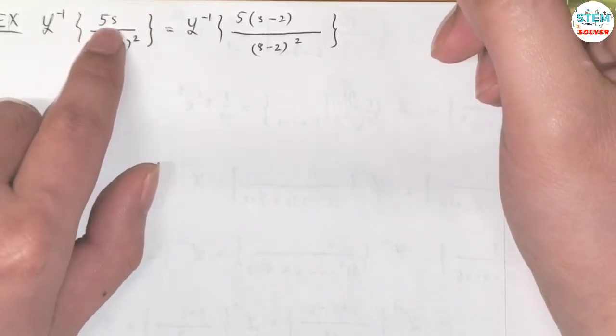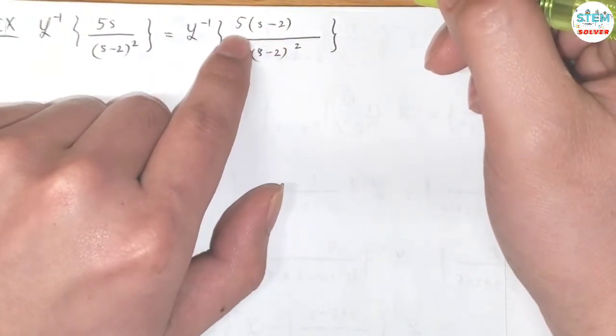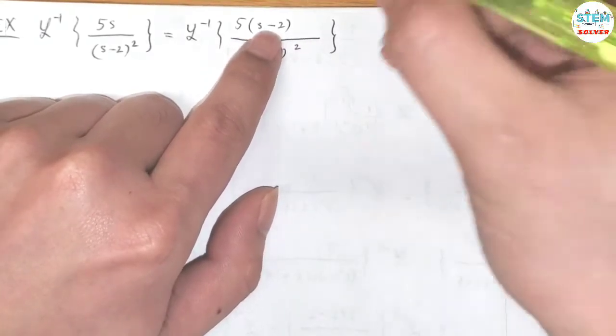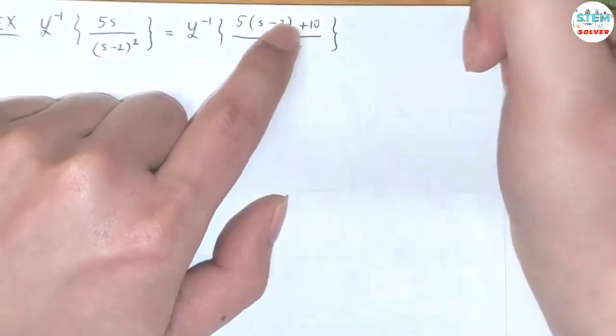So initially it just has 5s. But after I subtract 2, then distribute this, I have 5s minus 10. Well, we need to add 10 to compensate this.